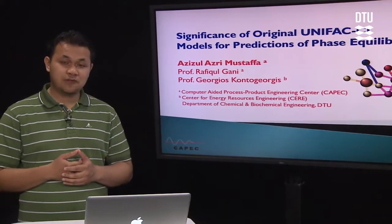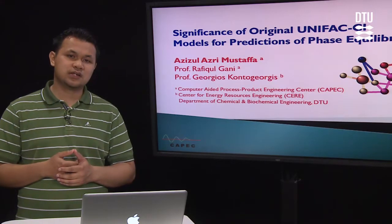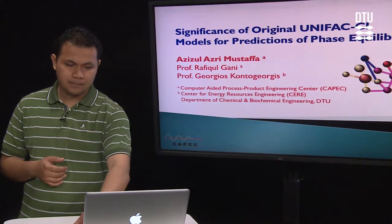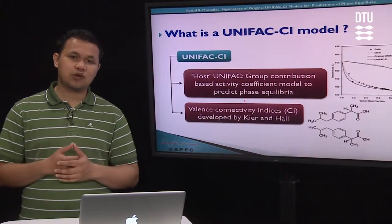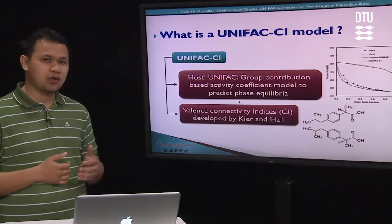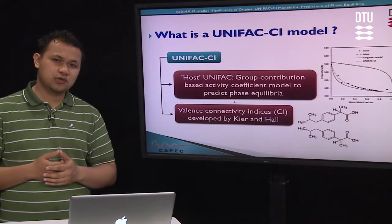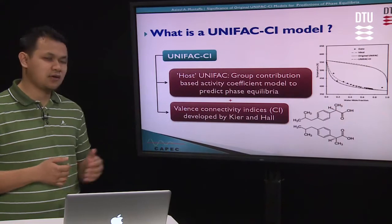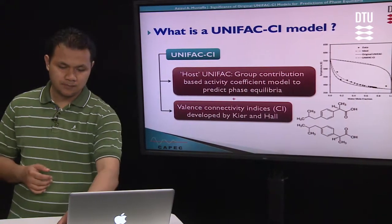I will talk briefly on the significance of the original UNIFAC CI models for the predictions of phase equilibrium. A UNIFAC CI model is a hybrid model which combines the UNIFAC model, which is a GC-based activity coefficient model to predict phase equilibrium of mixtures, and also valence connectivity indices which have been developed by Kier and Hall through several stages.